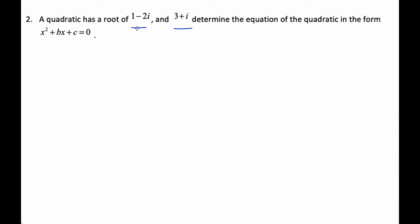Well, typically if we have one complex root and it has its conjugate pair, then b and c are real numbers. But because these are not a conjugate pair, b and c are not going to be real numbers. And so when I set up my factors,